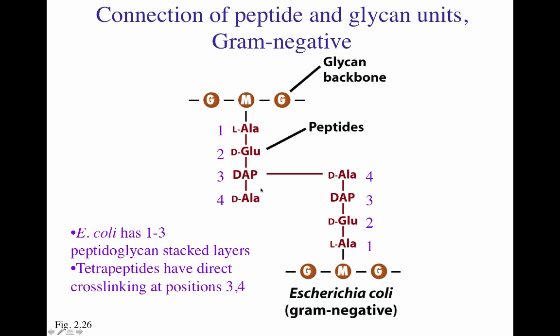The connection of the peptido and glycan unit in gram-negatives happens between the DAP molecule and the alanine molecule. In position one is L-alanine, position two D-glutamic acid, three DAP, and four D-alanine. Because of the extra carbonyl and amino group at the end of the DAP R-group, you can have a connection to the D-alanine molecule from an alternative neighboring peptidoglycan layer. The DAP at position three is connected to the D-alanine at position four of the neighboring molecule — a direct cross-linking at positions three and four.